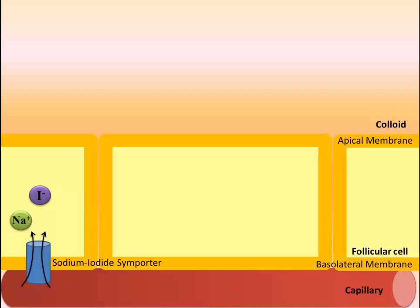Follicular cell vesicles contain the enzyme thyroid peroxidase, which oxidizes the iodide anion into iodine. While the follicular cells are trapping the iodide, the glycoprotein thyroglobulin is being synthesized by follicular cells. The thyroglobulin travels through the secretory pathway from the ER into the Golgi body and is packaged into secretory vesicles. These secretory vesicles then fuse with the apical membrane of the follicular cell, releasing thyroglobulin into the colloid.